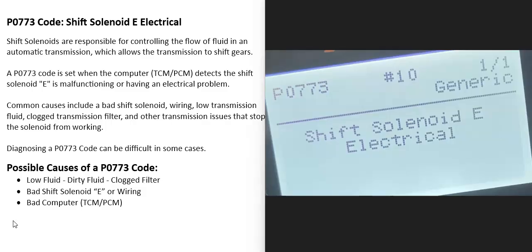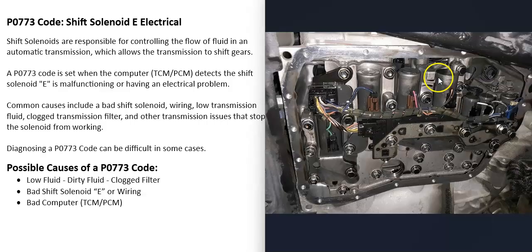Today I'm talking about a P0773 code, what it is, and how you can go about fixing it. The P0773 code is a shift solenoid E electrical issue.